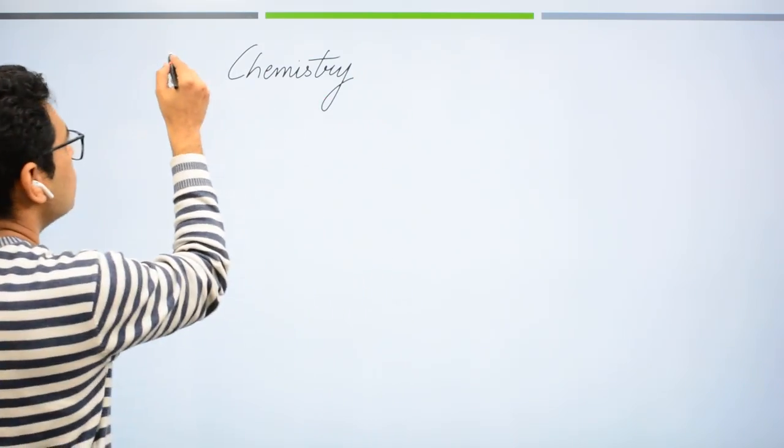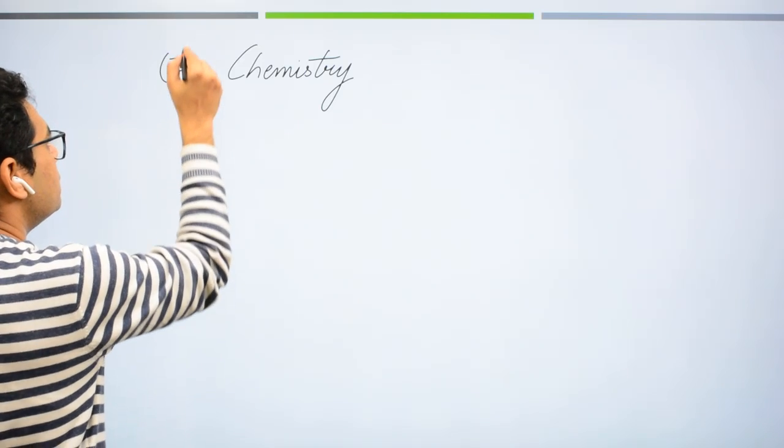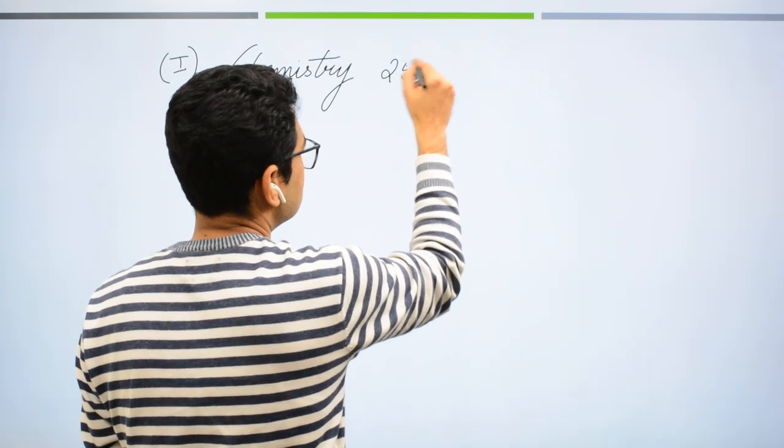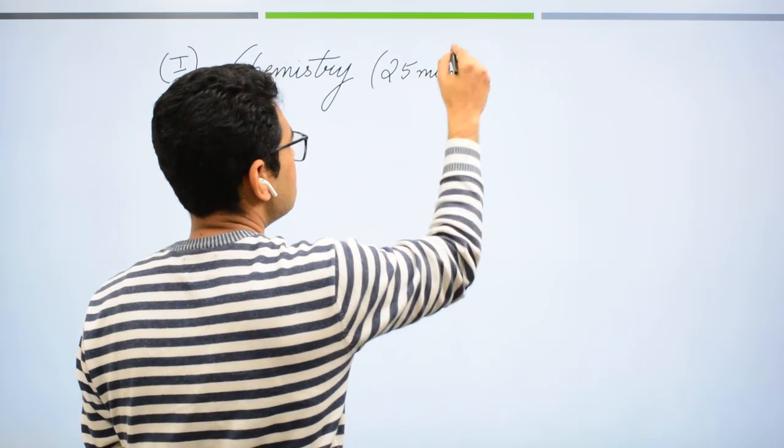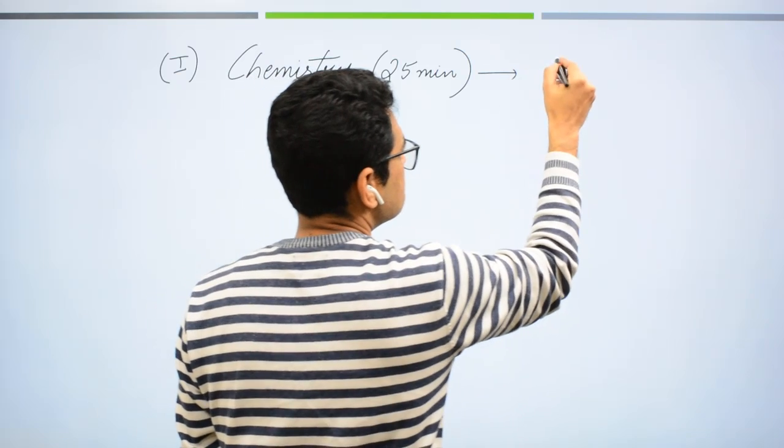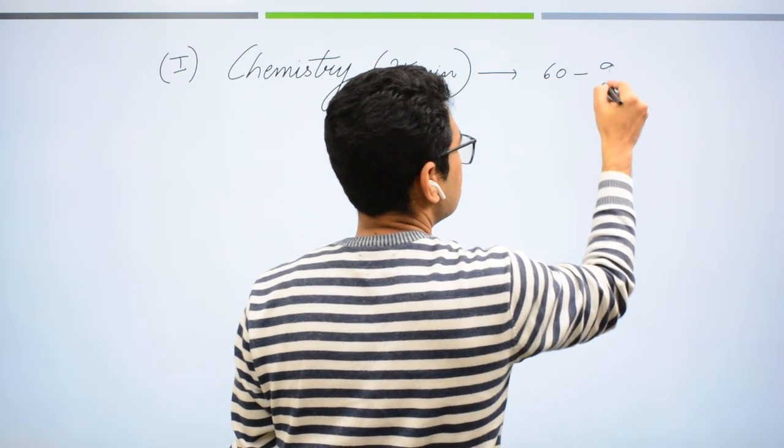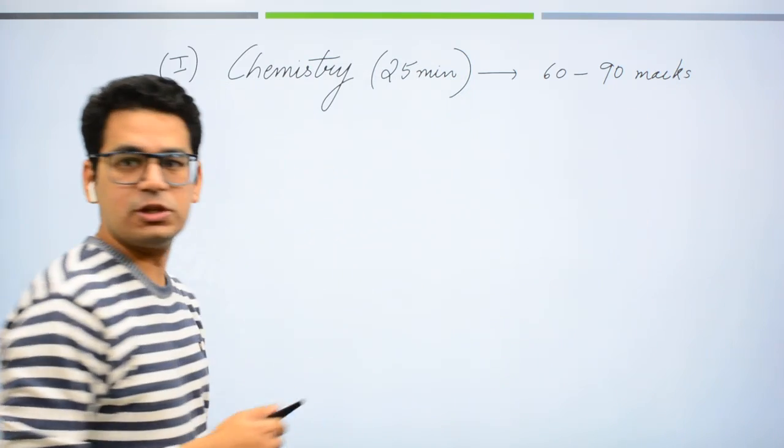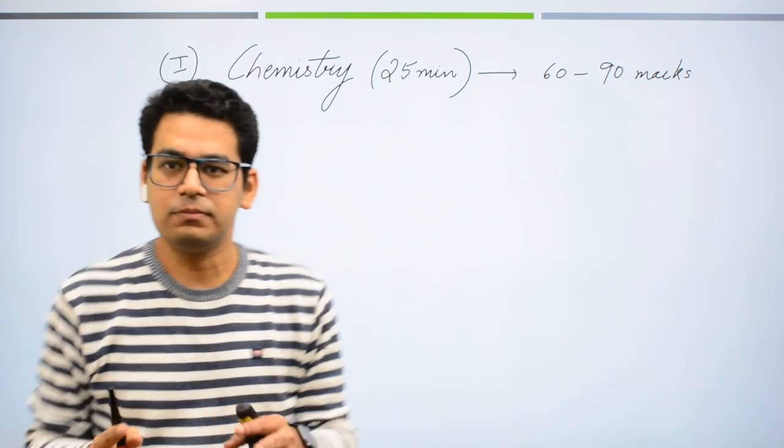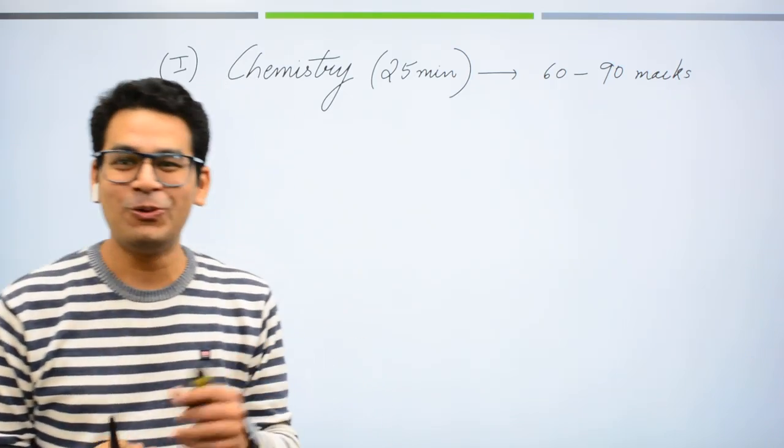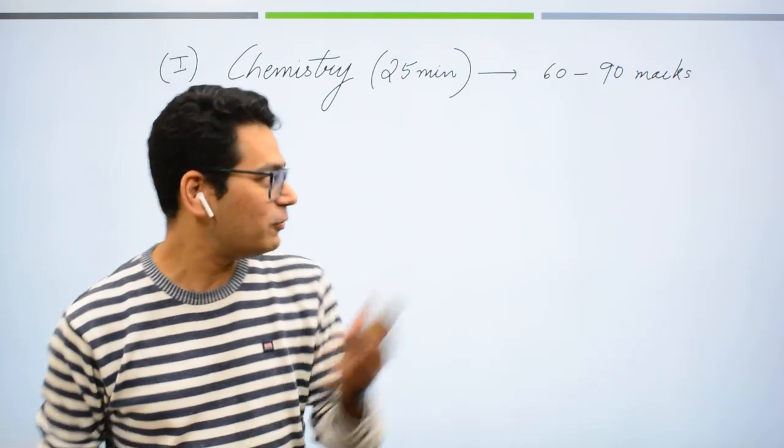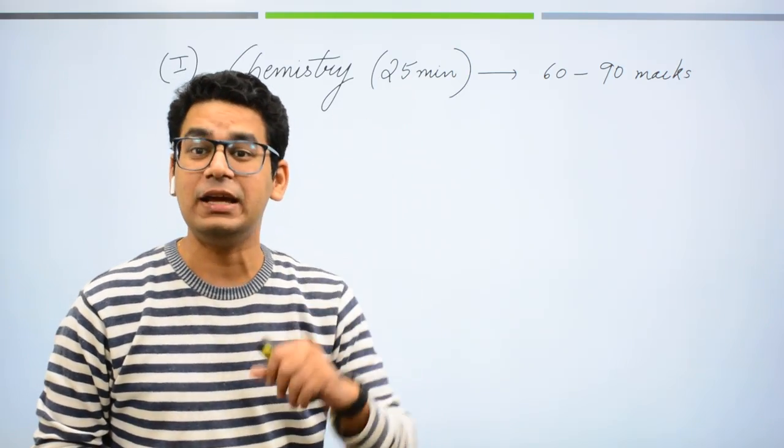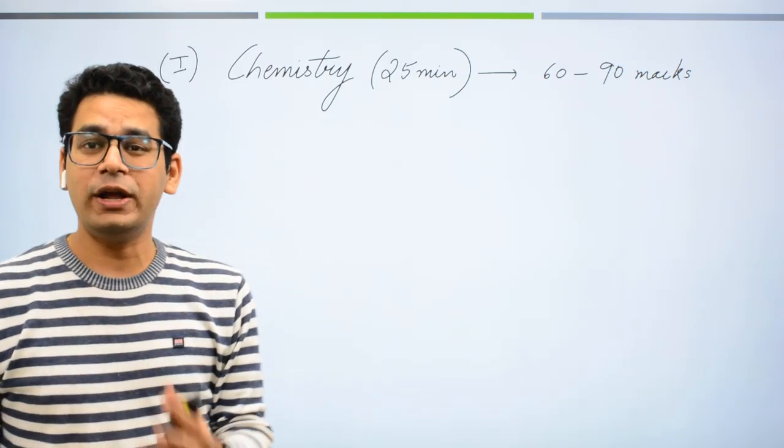Kyun start karna chahiye? Mera attempt hota hai, sabse pehla attempt hamesha chemistry pe hota hai. Kyun? Because in flat 25 minutes, mere paas chance hota hai 60-90 marks banane ka. 60-90 marks. Or agar mere ye 60-90 marks ban gaye, to aap samajh rahe na, mein paper mein kitna confident baithne wala, astas dekhe, logo ko hasar hounga re. To dekh yaar, paper khol diya, 90 number aage, 60 number ban gaye chemistry mein, woh bhi 25 minute bas hai.